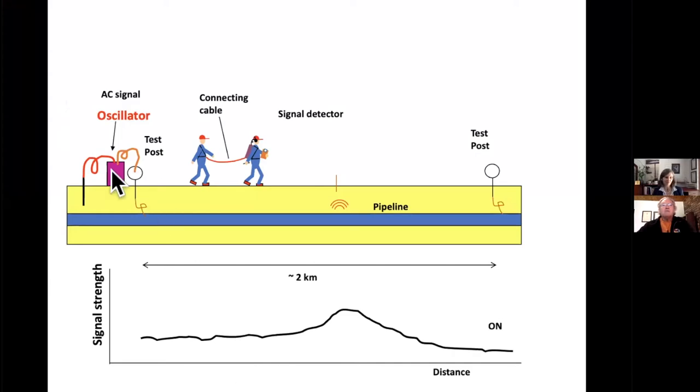In order to measure the gradient you have to have contact, so the original Pearson survey technique used an interesting method. You had two people tethered together by an interconnecting cable, and they would wear conductive boots — that gives you the signal from the ground, and since you're always standing on the ground you don't have to worry about losing contact and getting false indications. The signal generator was a specific AC frequency, matched to the characteristic of the pipe — different frequencies for, say, a bitumen coating versus a fusion bonded epoxy coating.